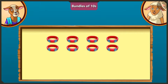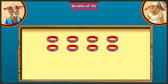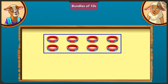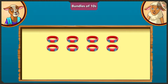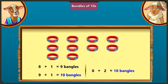Lily, if I have 8 bangles, how many bangles would I have to add so I would have 10 bangles? On adding 1 to 8, we get 9. By adding 1 to 9, we get 10. So we will have 10 bangles by adding 2 bangles to 8.